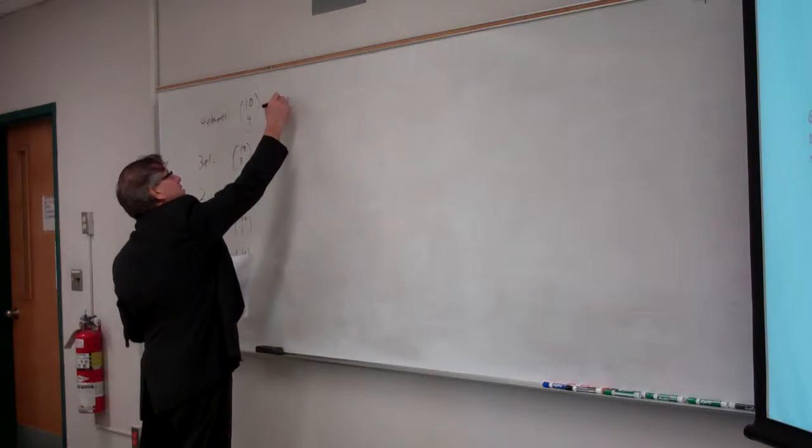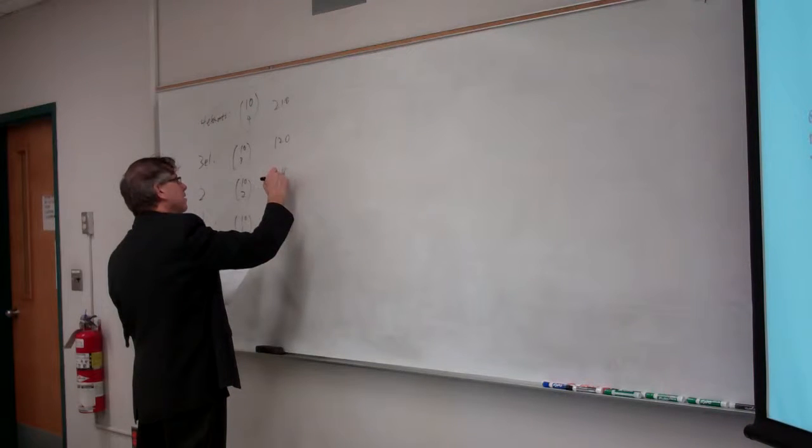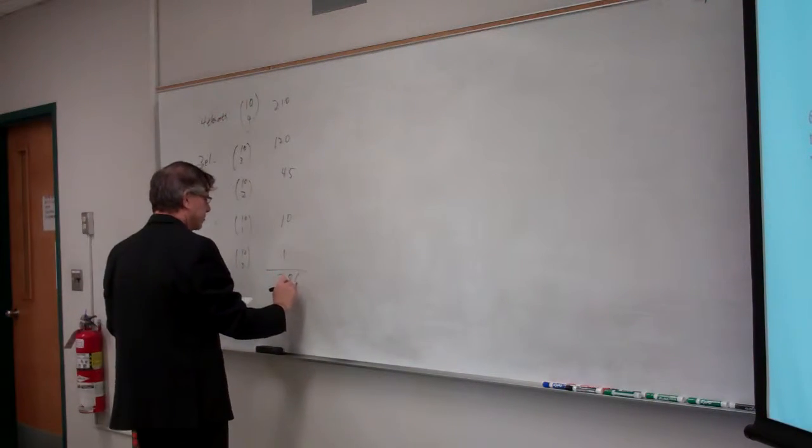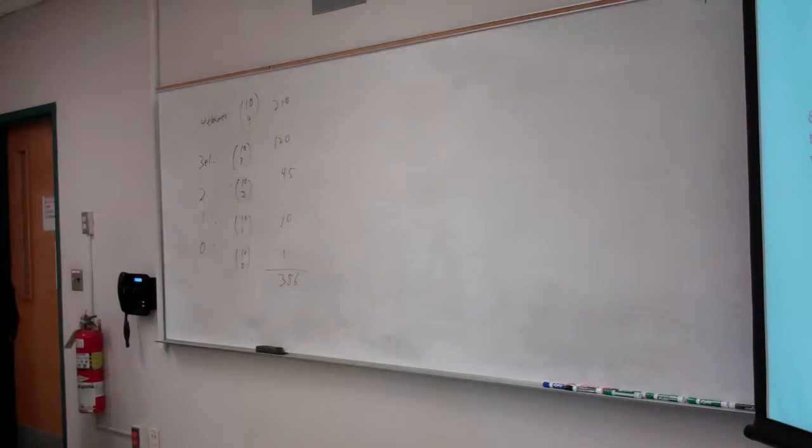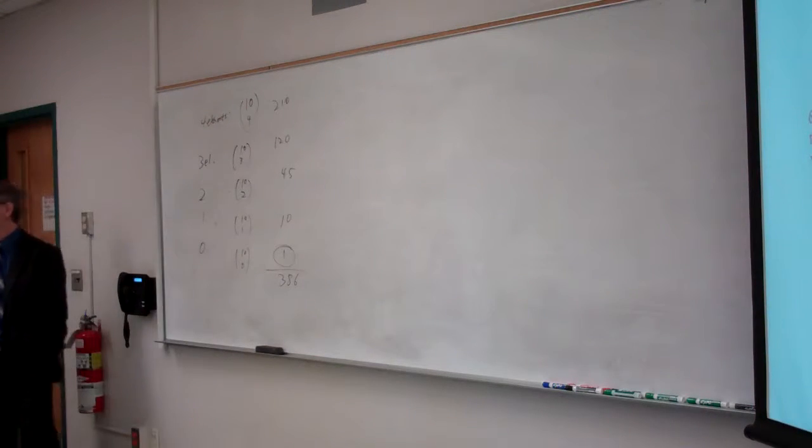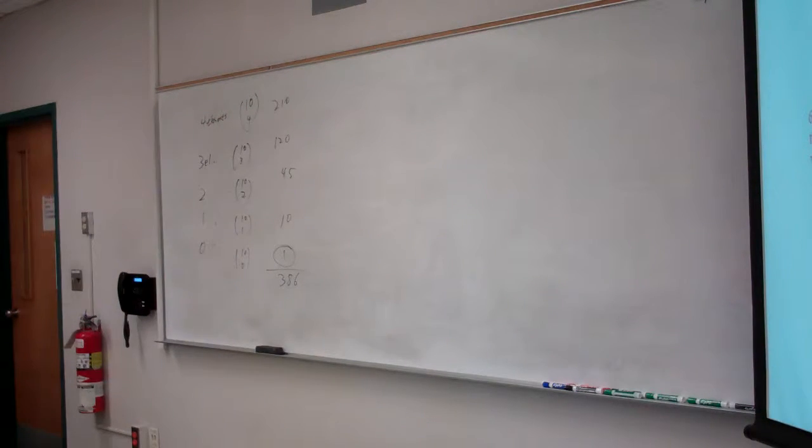And so you add those together, and that's your total number. So this is like 210, 120, 45, 10, and 1, 386. What's this one? Empty set. That's the empty set, no elements. That is a subset.